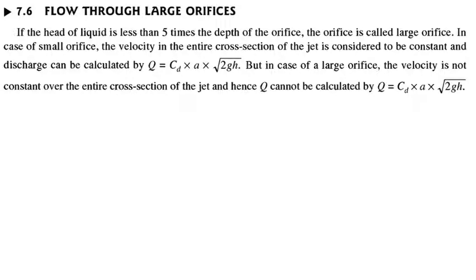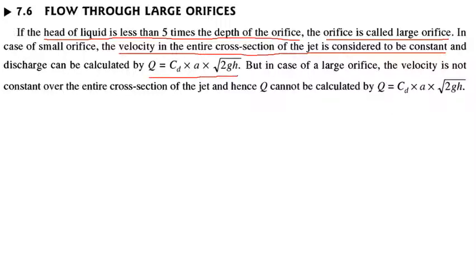Now let's see flow through large orifices. If the head of liquid is less than 5 times the depth of the orifice, the orifice is called a large orifice. For a small orifice, the velocity across the entire jet cross-section is considered constant, and discharge is Q = CD·A·√(2gh). But for a large orifice, velocity is not constant over the cross-section of the jet, so Q cannot be calculated using this equation.